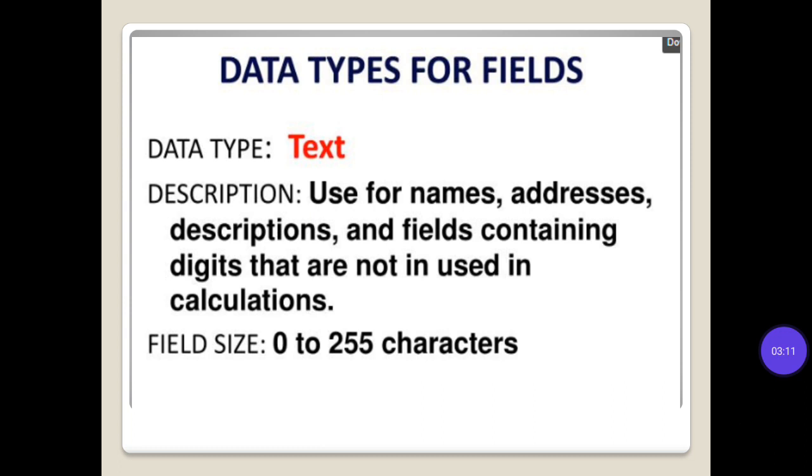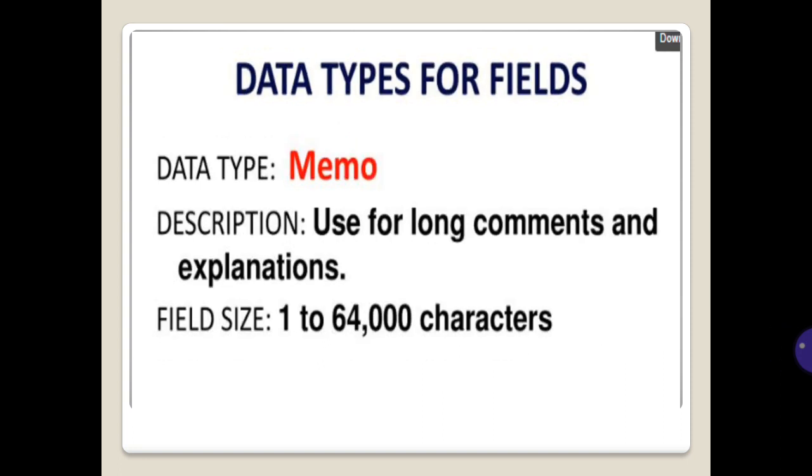Data types for fields. Data type: text. Description: used for names, addresses, descriptions, and fields containing digits that are not used in calculations. Field size: 0 to 255 characters. Data type: memo. Description: used for long comments and explanations. Field size: 1 to 64,000 characters.